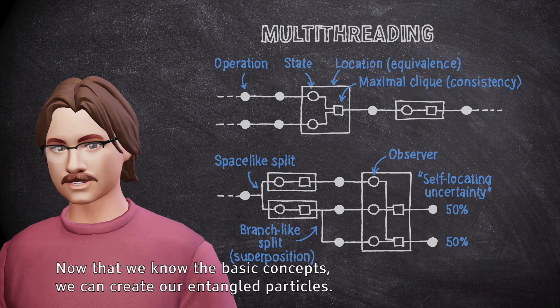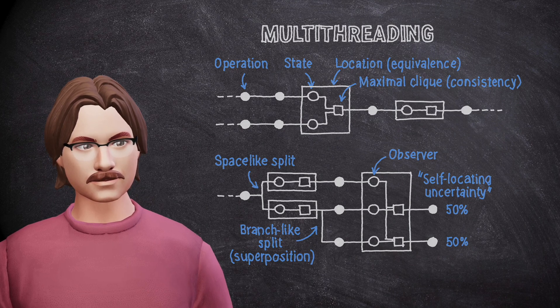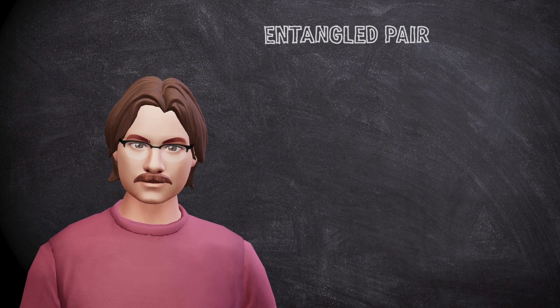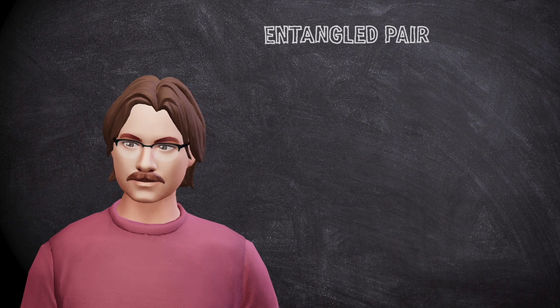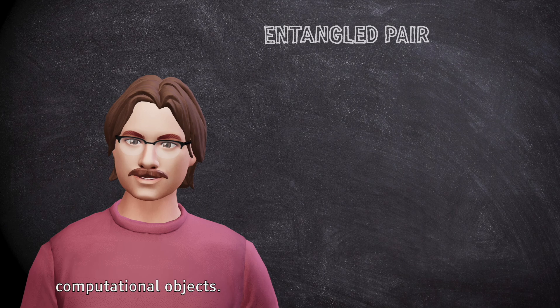Now that we know the basic concepts, we can create our entangled particles. Spin is an inherent property of all particles. In our model, it refers to just another way we can project our computational objects.